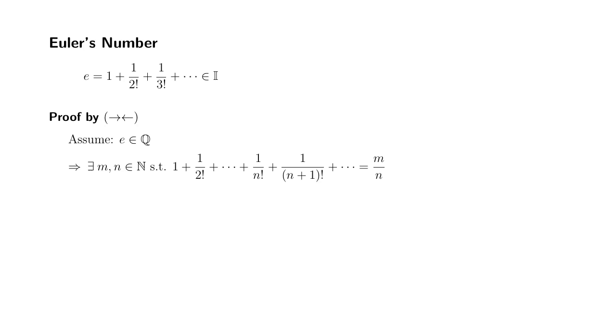Then we're going to do this following manipulation of the equation. First, we take the first n terms of the left-hand side, put it on the right-hand side. And then you're left with 1 over n plus 1 factorial plus 1 over n plus 2 factorial, and so on.